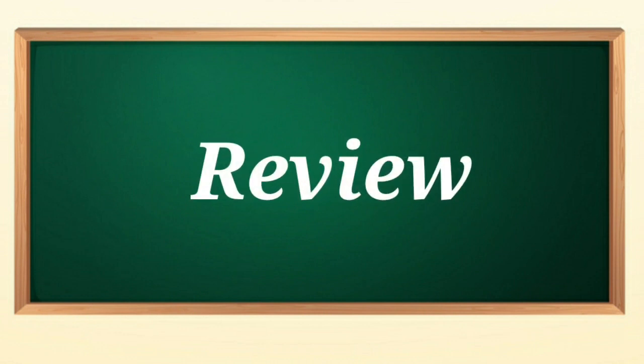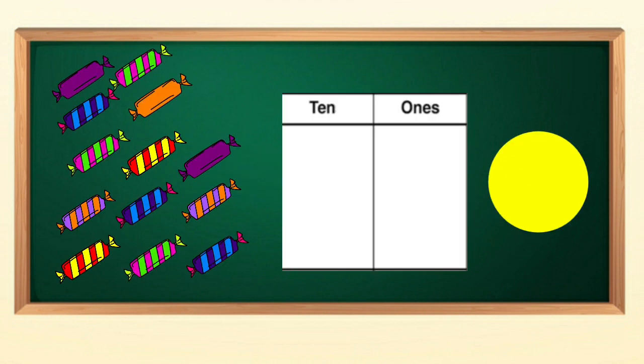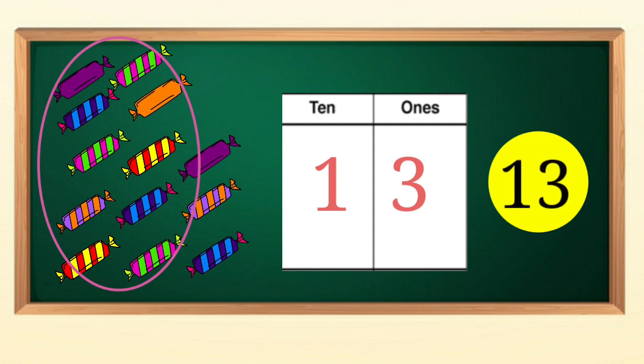Now, let's do a quick review. Children, we have so many toffees around. Now, let's try to circle ten toffees to make it into one ten. Now, we have one ten and three ones. It means thirteen.